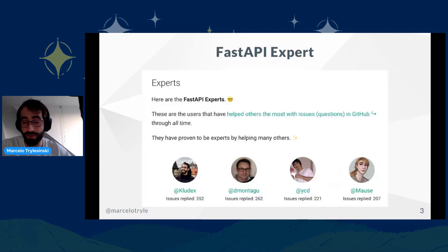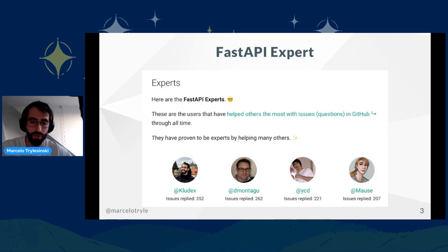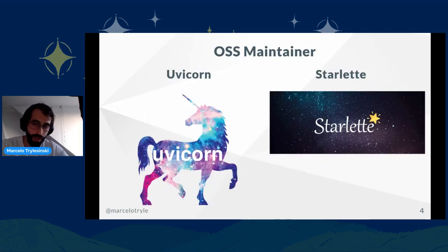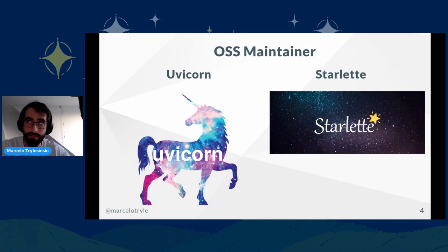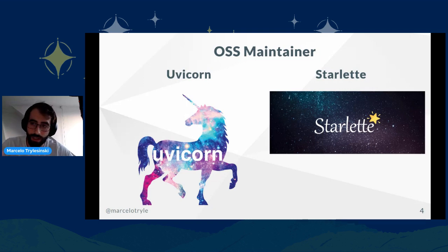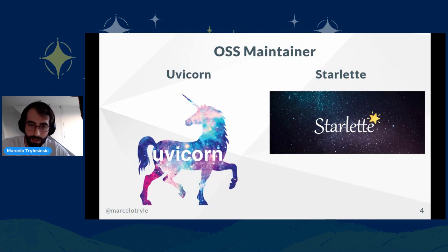I am considered a FastAPI expert. I've been helping the community for more than two years now, mainly helping with issues on the Discord server and also code contributions. Besides that, I am a maintainer of Uvicorn and Starlette. Uvicorn is a web server which runs applications like FastAPI, and also different applications that follow the same interface — which would be ASGI. And Starlette is a web framework that is basically the web part of FastAPI, so FastAPI inherits the Starlette main class and makes use of that.